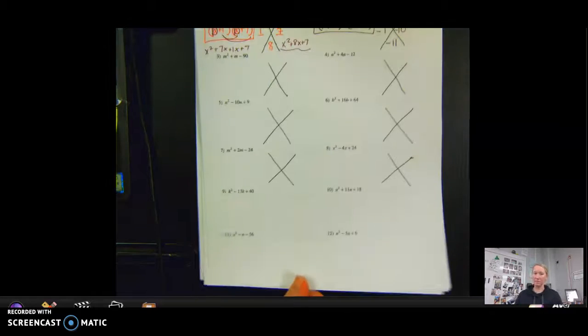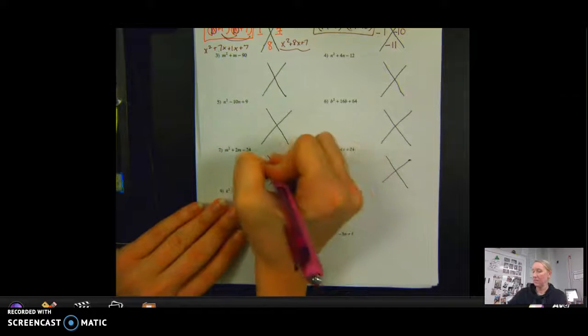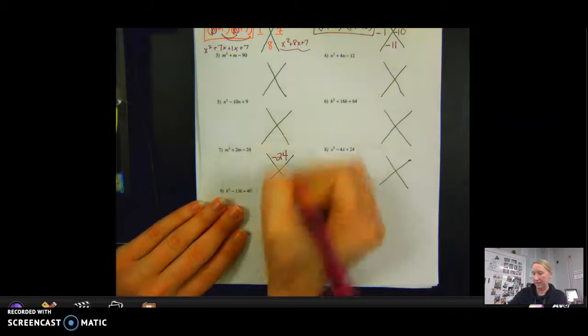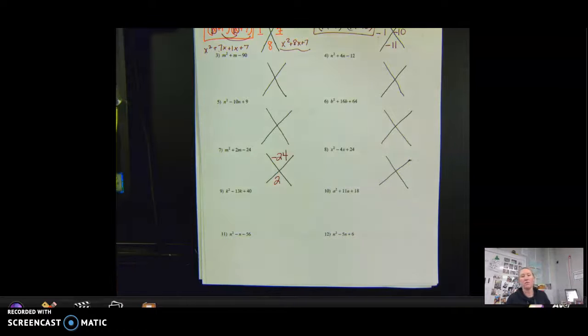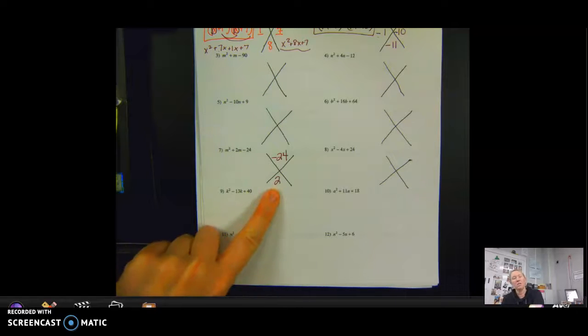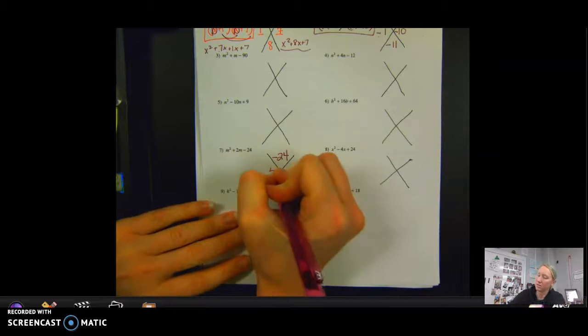The next one, I'm going to skip down to number 7. So negative 24 when I multiply, and then 2 when I add. So factor pairs of 24 would be 1 and 24, does not give me 2. 2 and 12, no combination that gives me 2. 3 and 8 does not give me 2. 4 times 6, 4 times 6 does give me 2 somehow, some way. So when I multiply these two, I want a negative.